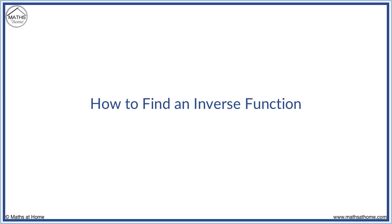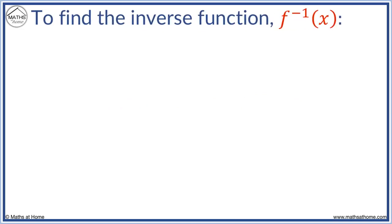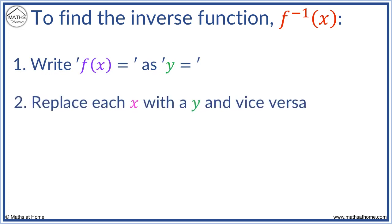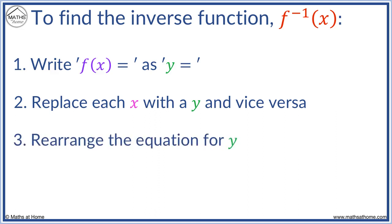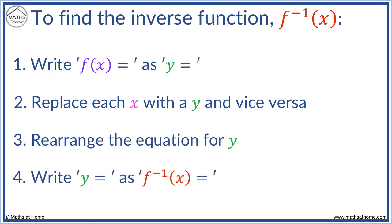In this lesson, we learn how to find an inverse function. The inverse function is written as f to the minus 1 of x. To find it, we first write f of x as y, then replace each x with a y and vice versa. Then rearrange this equation for y. Finally, write y as f to the minus 1 of x.